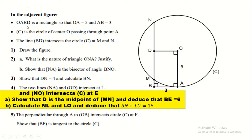We have OABD as a rectangle so that OA equals 5 and AB equals 3. We also have a circle C of center O passing through the point A. The line BD intersects this circle at the points M and N, as you see here.